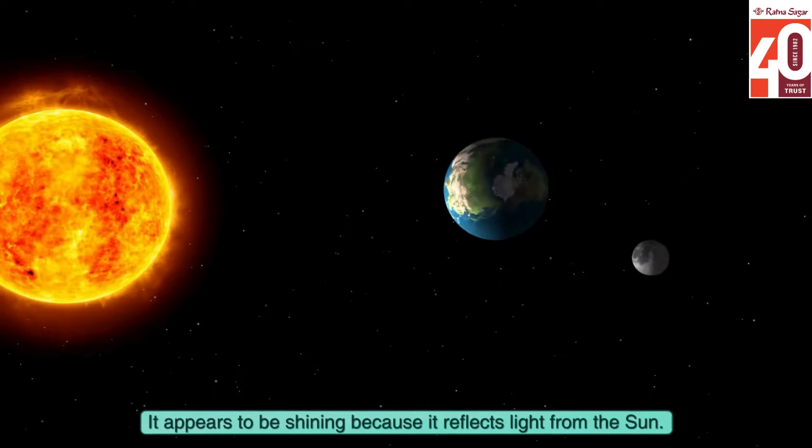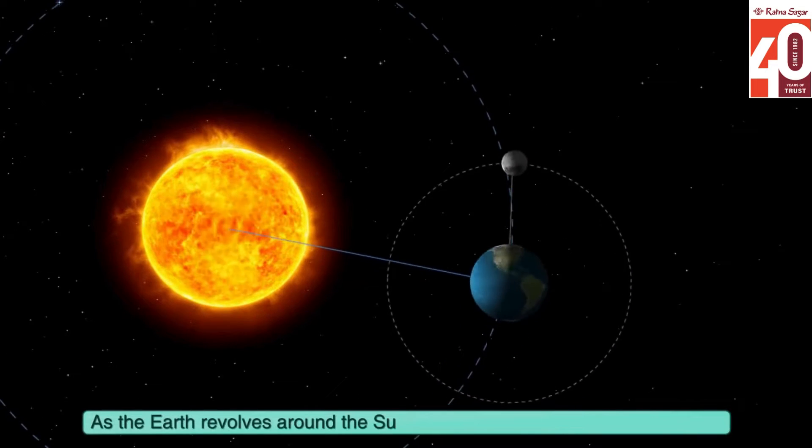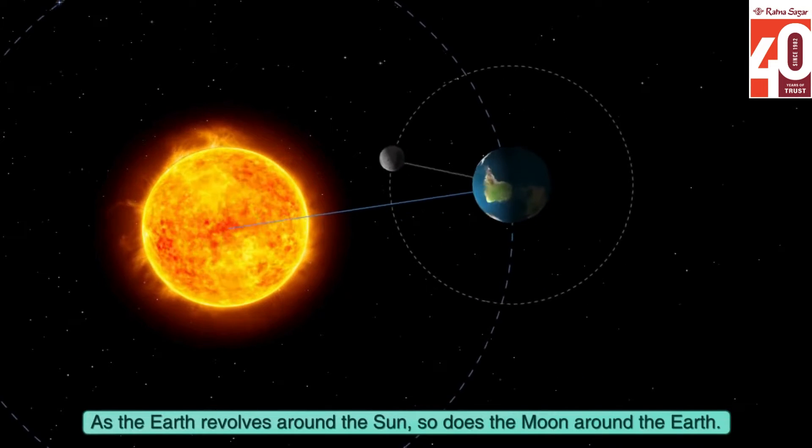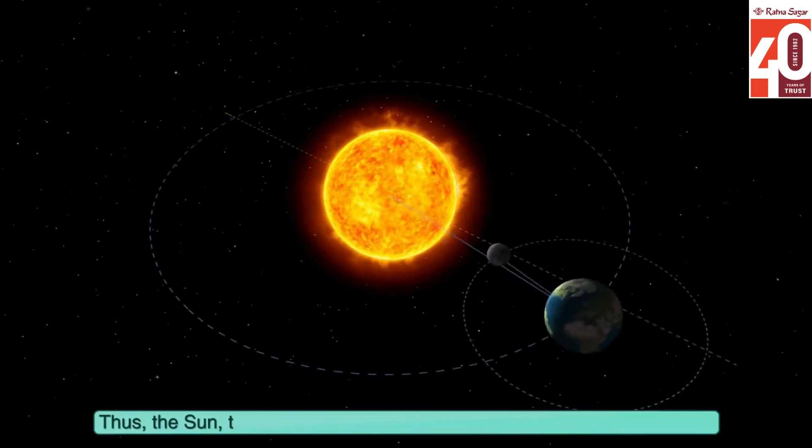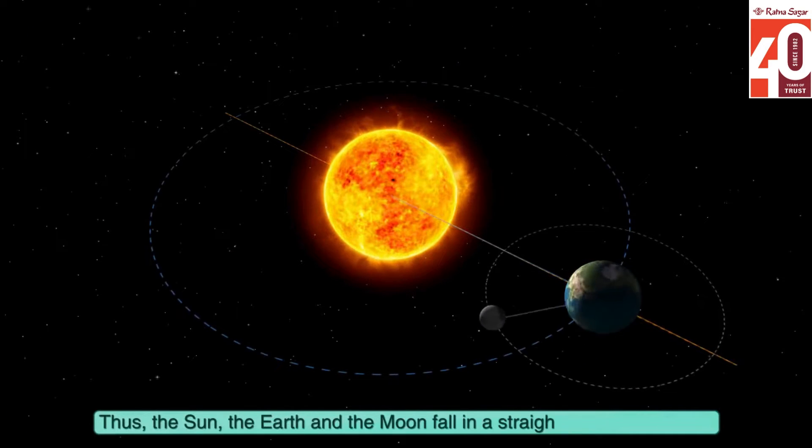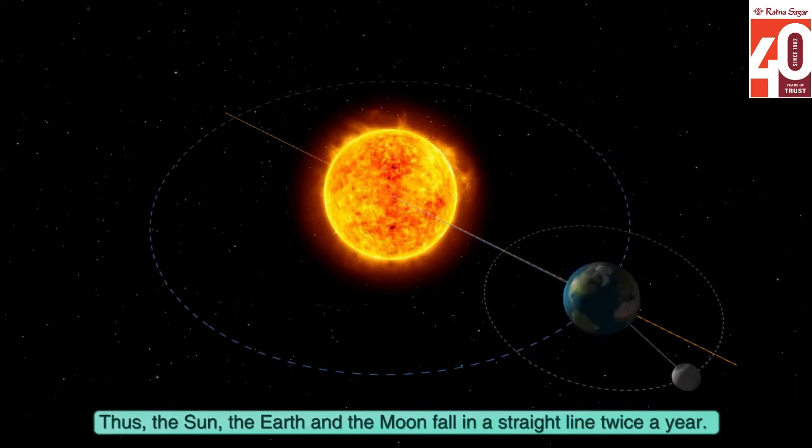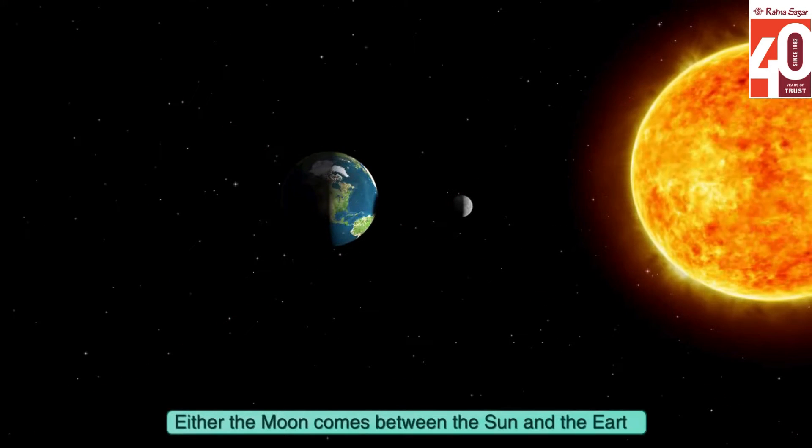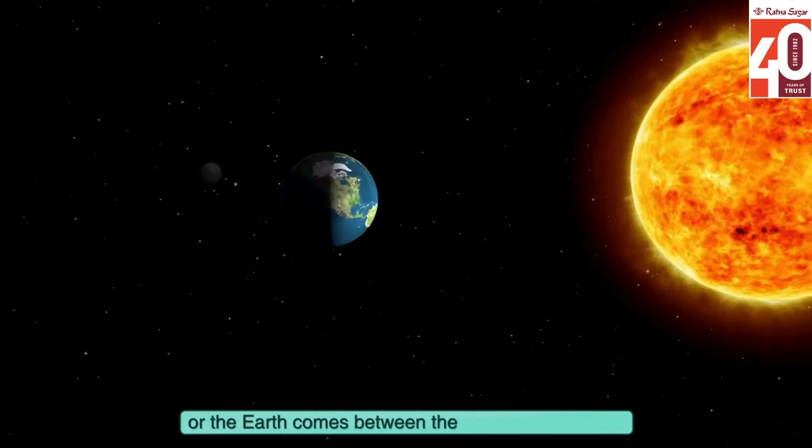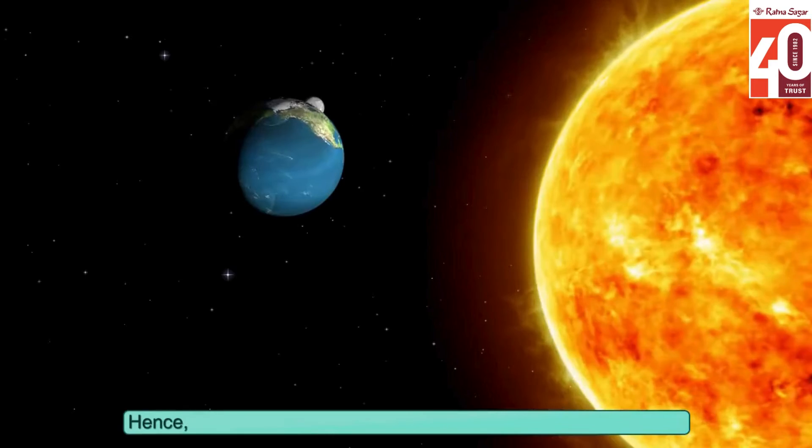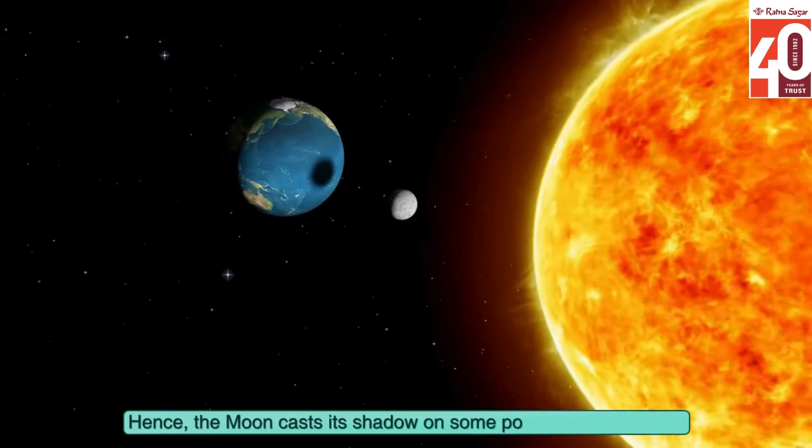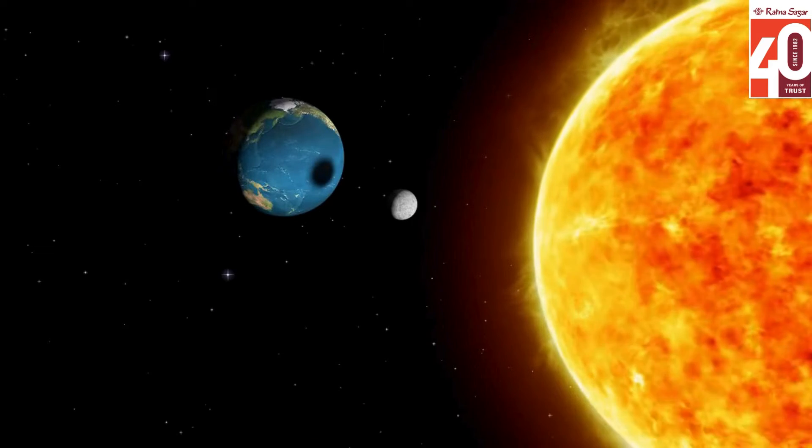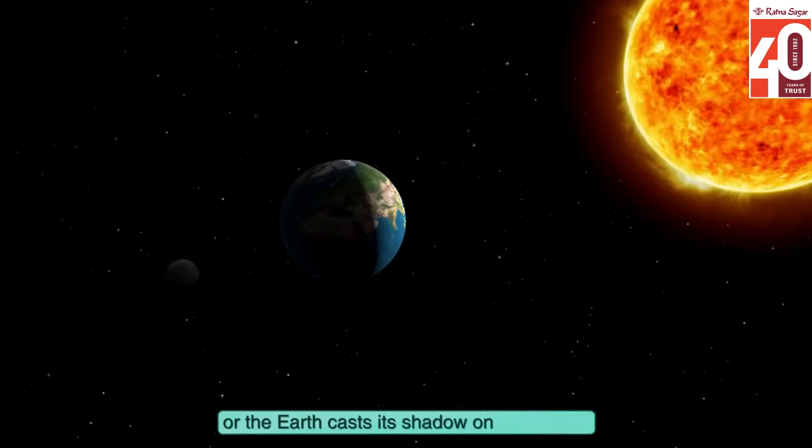As the Earth revolves around the sun, so does the moon around the Earth. Thus, the sun, the Earth, and the moon fall in a straight line twice a year. Either the moon comes between the sun and the Earth, or the Earth comes between the sun and the moon. Hence, the moon casts its shadow on some portions of the Earth, or the Earth casts its shadow on the moon.